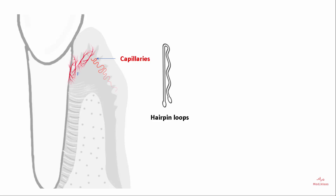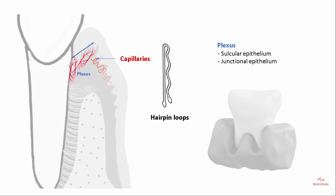Plexus are seen along the sulcular epithelium and the junctional epithelium. The sulcular plexus has a flat appearance and extends from the base of the sulcus to the marginal gingiva. In the col area, anastomosing capillaries and loops are seen.